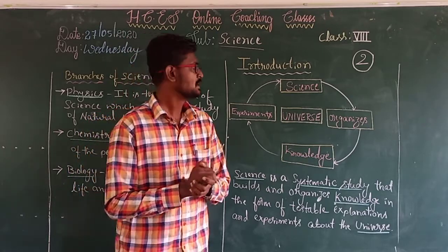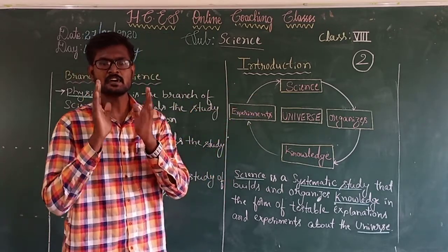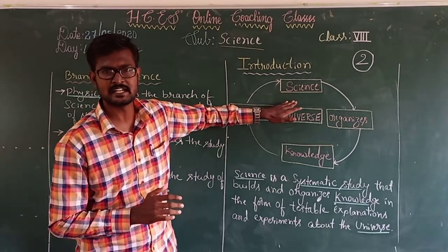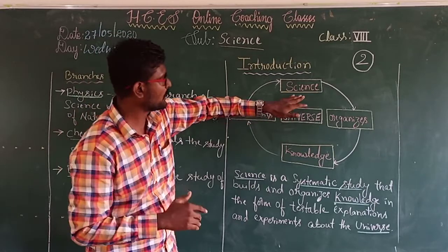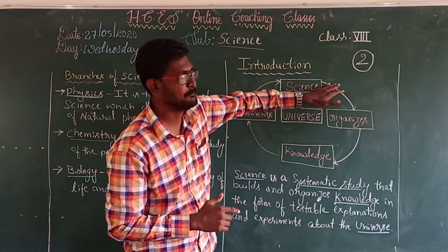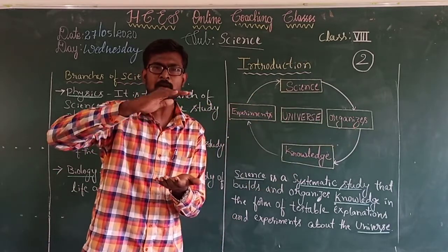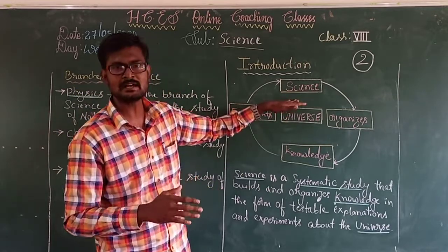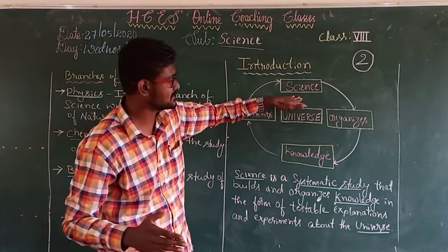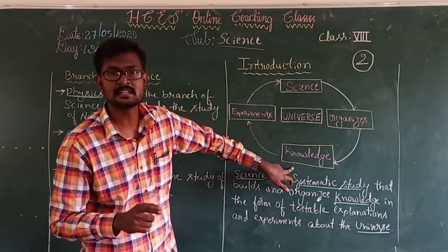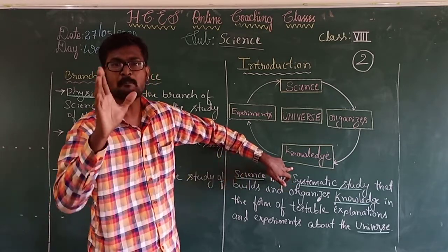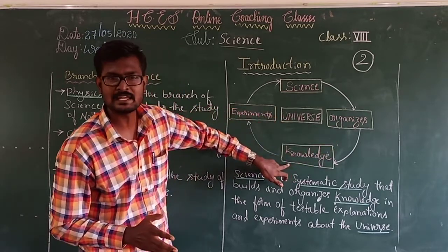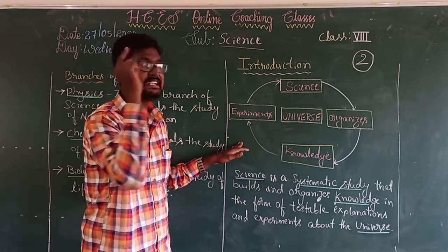So in today's session, I am going to give you a definition for science, the branches of science, and its sub-branches. So let us start our session. Science is a systematic study — systematic means it should be in an ordered manner. Science is a systematic study that builds and organizes knowledge in the form of testable explanations and experiments.